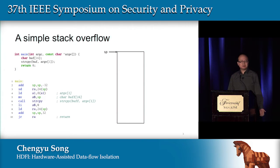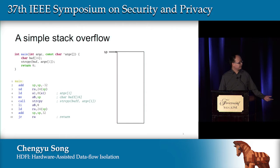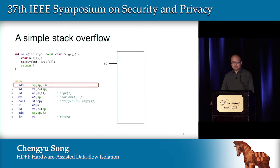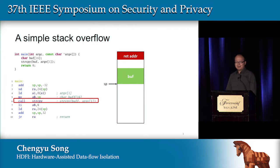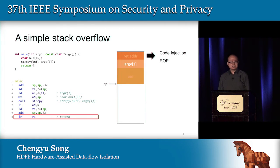To understand how memory corruption vulnerabilities can be exploited and prevented, let's use this simple stack overflow example. The program on the left side has the stack overflow vulnerability, and the corresponding assembly is on the bottom. At line two, we allocate a new buffer. At line three, we push the return address on the stack. At line six, when we call string copy, if the passed argument is large enough, we can overflow the buffer and compromise the return address. If an attacker can control the return address, they can leverage this to launch a variety of attacks, including code injection and return-oriented programming.